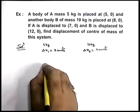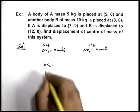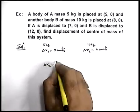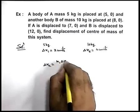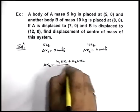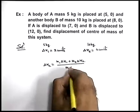Now here we can find out the delta x-c, that is the displacement of centre of mass, which will certainly be in x direction, which can be given as m-one delta x-one plus m-two delta x-two divided by m-one plus m-two.